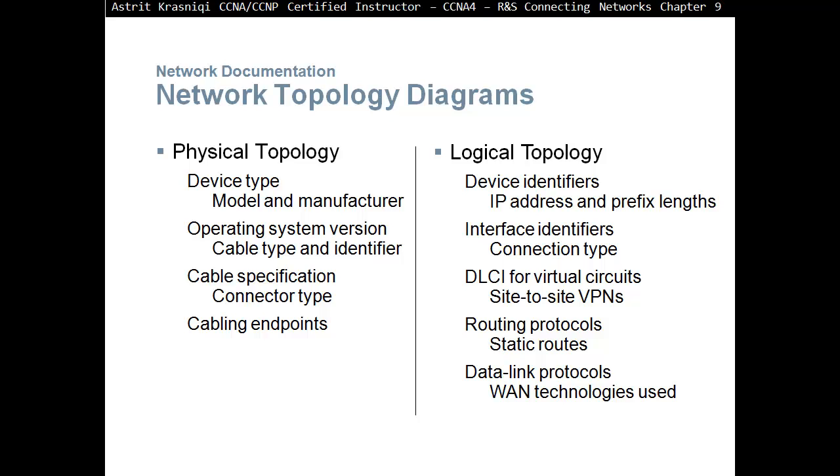Then we have logical topology. This should be a bit more involved: device identifiers, IP addresses, prefix length including subnet mask for IPv4, interface identifiers like Gigabit Ethernet, Fast Ethernet, and so on, connection type, DLCI for virtual circuits like frame relay, site-to-site VPNs, routing protocols, any static routing that you have, data link protocols, and wide area network technologies used.